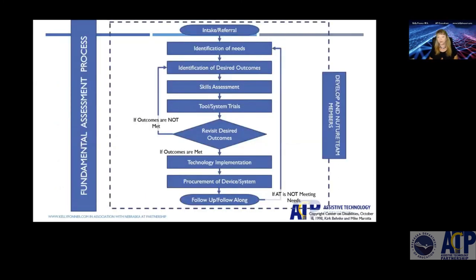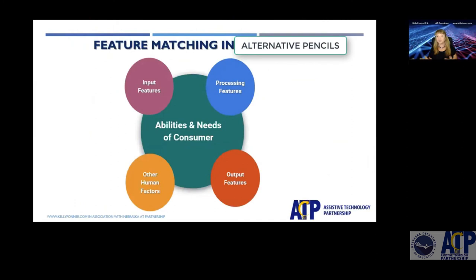Feature matching is a part of the fundamental assessment process. After you've gathered background information and looked at individual skills, as you're trying to decide which alternative pencils to try out, you want to match individual skills, needs, and expectations with an alternative pencil before making decisions. We break tools down into input features — the human interaction with the technology — processing, which is cognitive interaction, and for alternative pencils the processing features have a lot to do with layout.